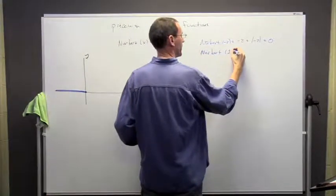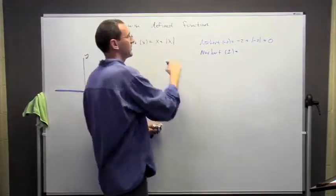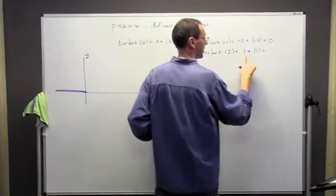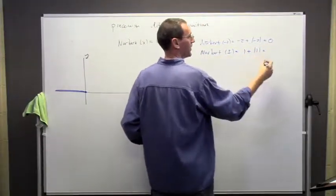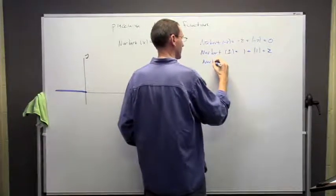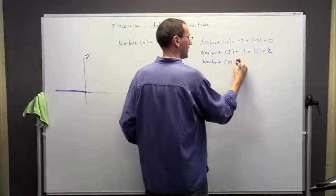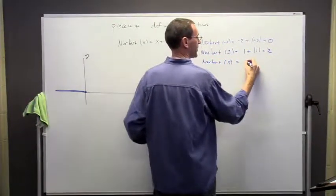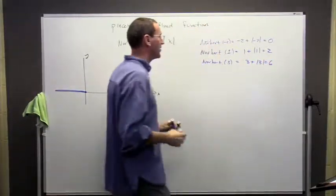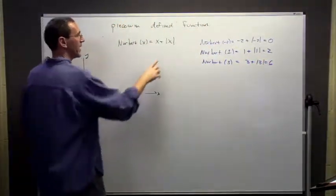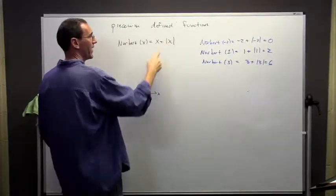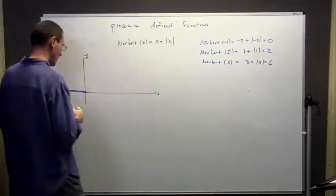What happens if I plug in a positive value? If I plug in x equals 1, it's going to be 1 plus the absolute value of 1, which is 2. If I plug in x equals 3, I'm going to get 2 times that number, because the absolute value of x is just x if x is positive, so I get x plus x equals 2x.